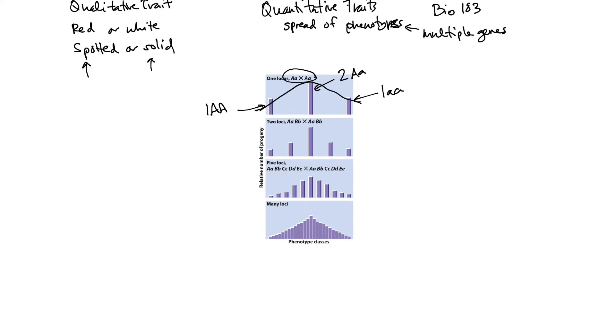If we consider two loci now and do a cross between dihybrids, we're going to get the smallest number of individuals who are homozygous on each side and the greatest number of individuals who are heterozygous at all loci. We can see a similar trend, all homozygous on each end and all heterozygous. When we look at even more traits, five loci in this case, and when we stop being able to distinguish between the phenotype categories.